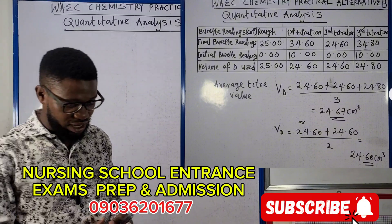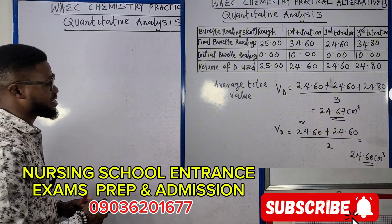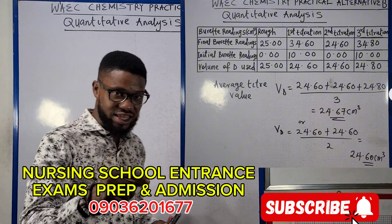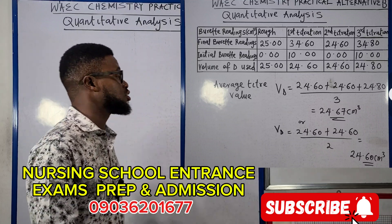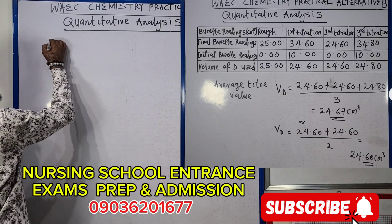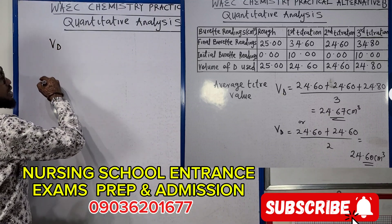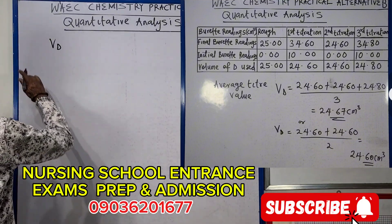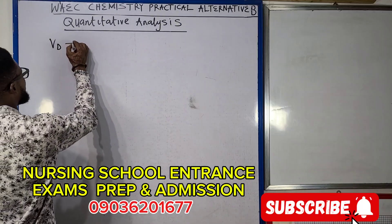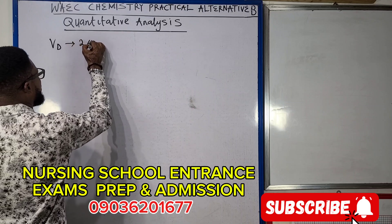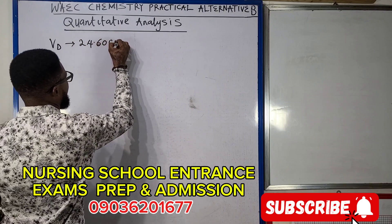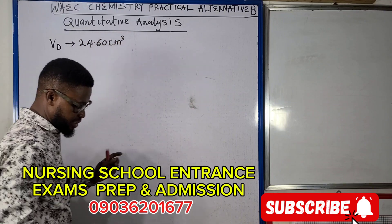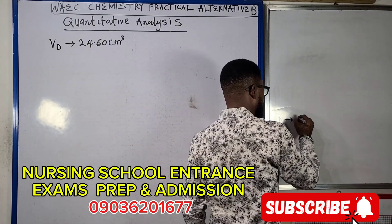A quick reminder that in the last lecture video, the link is in the description, we've come to the conclusion that our VD can either be 24.67 or 24.60, but in this question my VD is going to be 24.60.